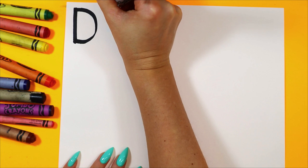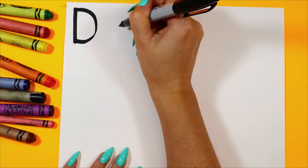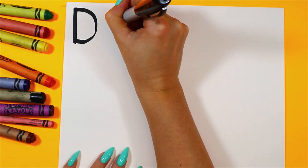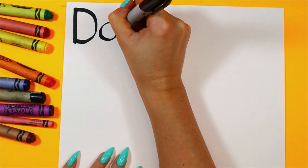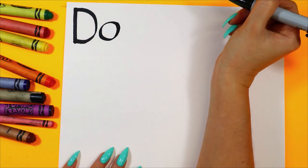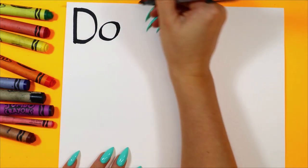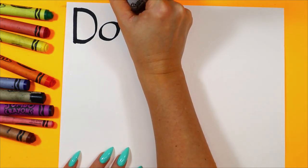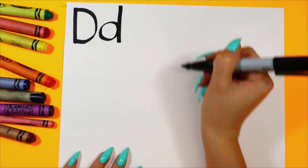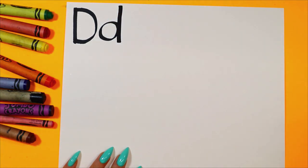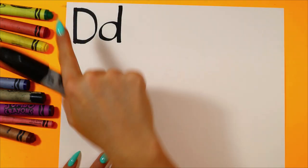Next we're going to do the lowercase letter D. We're going to start with a circle and a line that goes beside it to make our lowercase letter D.